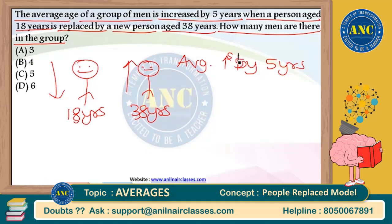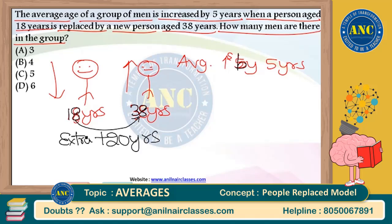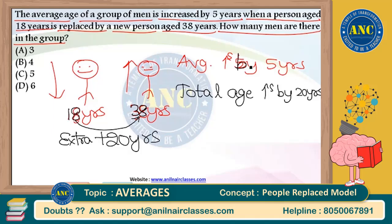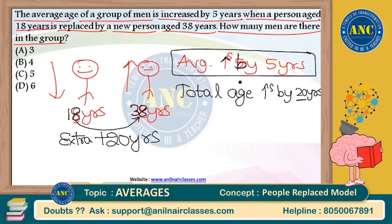The 18-year-old person left and a person aged 38 years came inside. That means the new person brought 20 years extra inside the class. Total age increases by 20 years, and it is also given that average increases by five years. If the average of four people increases by five years, each of these four people should increase by five years, so total increases by 20. 4 × 5 = 20. Answer: four people were there.